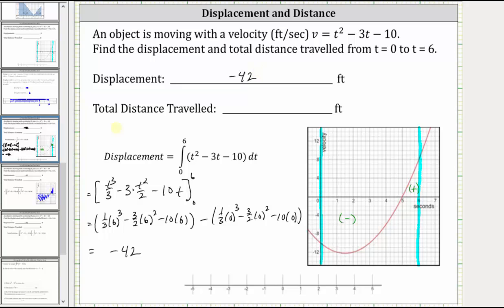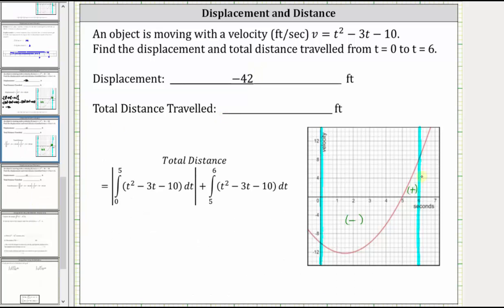Now let's find the total distance traveled. We know it must be positive, so we need to break up the interval from zero to six into two parts — one where the area is below the x-axis and one where it's above. From zero to five the area is below the x-axis, so we take the absolute value of that integral and add it to the integral from five to six. We must take the absolute value of the integral from zero to five because we want the area to be positive, not negative, to find the distance.